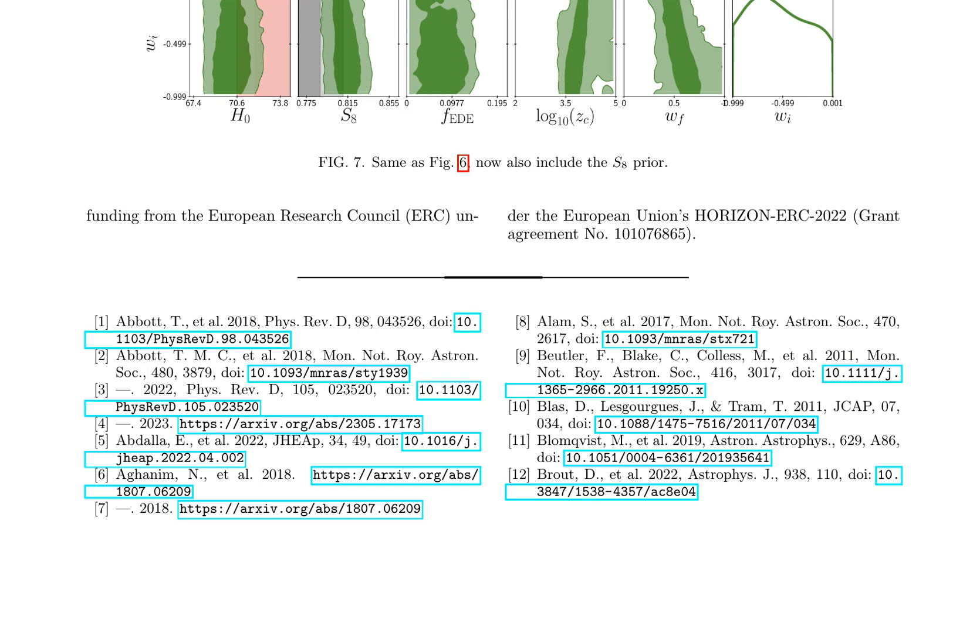Furthermore, the study highlights the importance of considering the S8 prior in future cosmological analyses, as it can significantly impact the accuracy of parameter inference. The authors also discuss the limitations of their study, acknowledging the assumptions made regarding the priors and the potential impact of systematic uncertainties on the results. They emphasize the need for future work to address these limitations, including the exploration of alternative priors and the incorporation of additional datasets to further constrain the S8 prior.